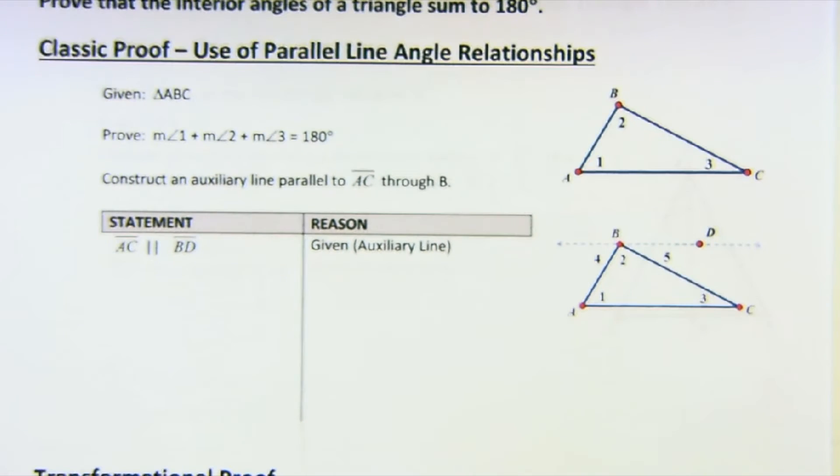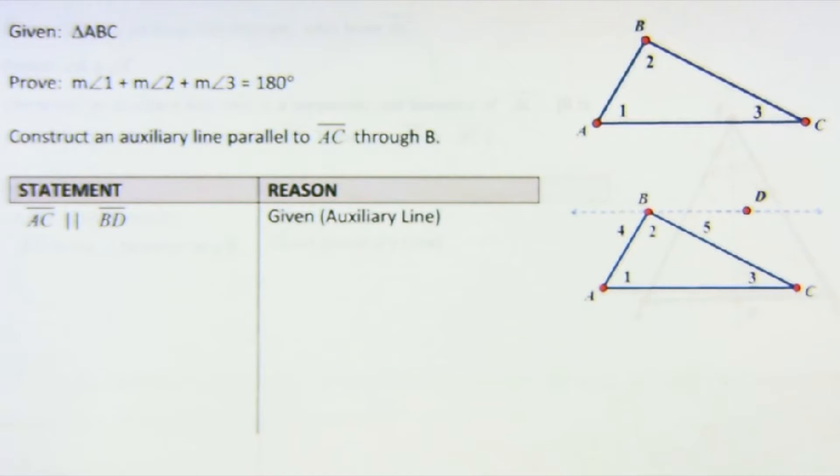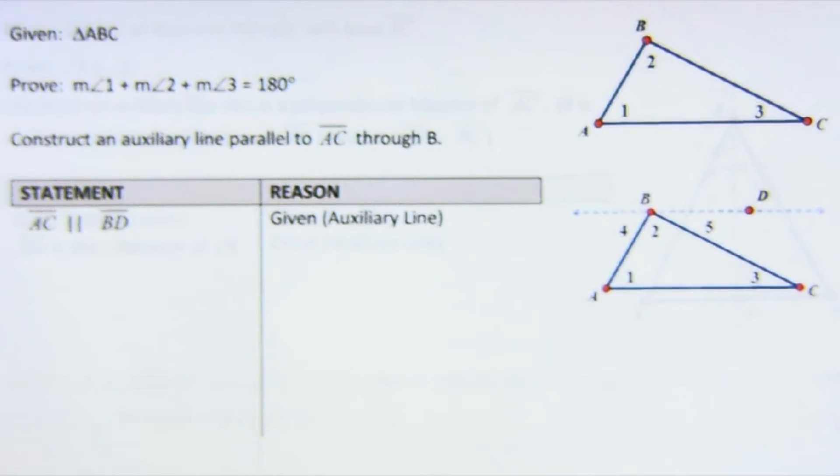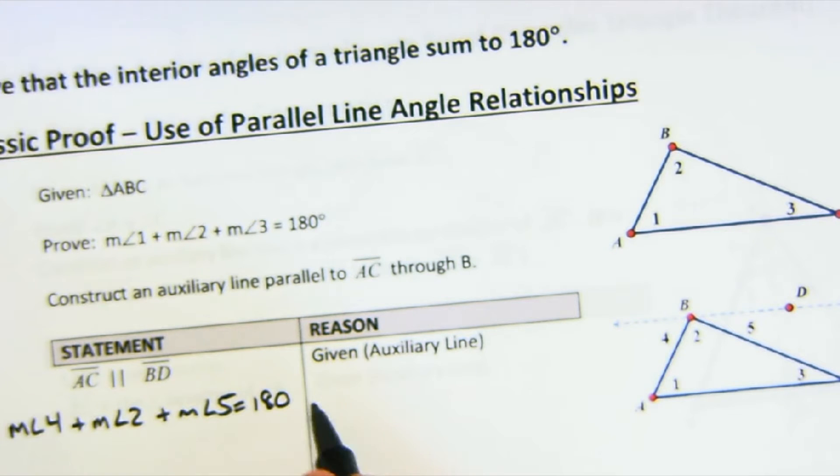Notice I also labeled the new angles angle 4 and angle 5. And ultimately this is just the idea that I noticed that the measurement of angle 4 and the measurement of angle 2 and the measurement of angle 5 all add up to 180 because they are a linear pair or supplements on a line.